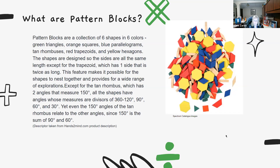Just a quick overview in case you're watching this pattern block session for the first time. Pattern blocks are just shapes — they can be made of wood or plastic, and they come in six different colors and shapes: hexagons, equilateral triangles, squares, trapezoids, and two different kinds of rhombus — a dark blue fatter one and a light, quite skinny one. These pieces fit together with common links, allowing us to create patterns, figure out different sizes of area, perimeters, and look at how they fit together as a fraction of a whole.